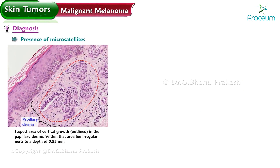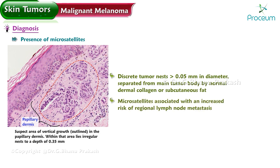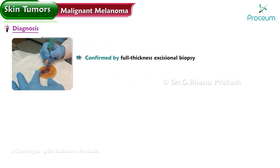For diagnosis, microsatellites are discrete tumor nests greater than 0.05 millimeters in diameter, separated from the main tumor body by normal dermal collagen or subcutaneous fat. Microsatellites are associated with an increased risk of regional lymph node metastasis, confirmed by full-thickness biopsy.